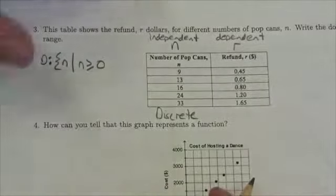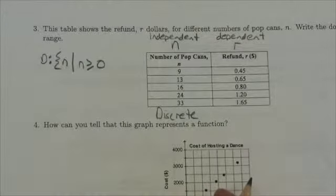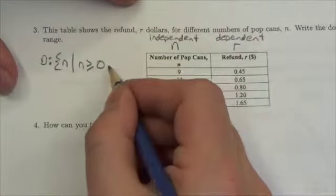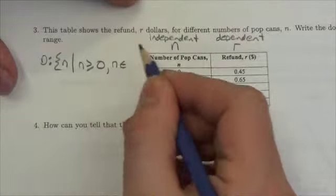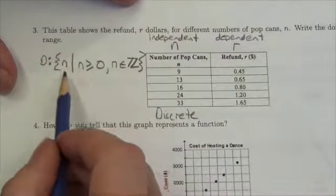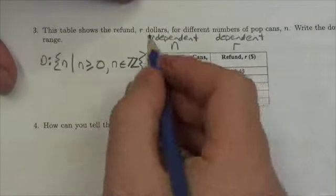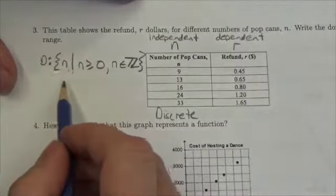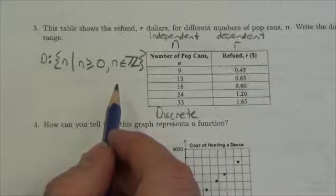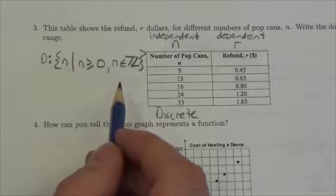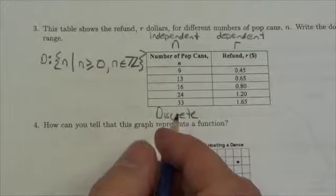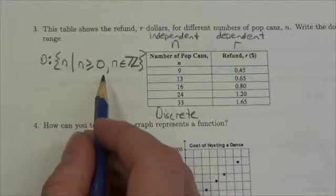Now what that means is my n is going to be greater than or equal to zero. Now there's no upper limit to this—there is a practical upper limit, but just in terms of what you could bring, there's really no definable upper limit. But I can't have fractions here, so this is going to be as long as n is an element of the integers. Greater than or equal to zero, so long as n is an element of the integers. Now you might also argue that n is just an element of the whole numbers, but the idea of a whole number is not universally accepted, so this is probably a more universally accepted way to write that: greater than or equal to zero because you could go in with no cans.